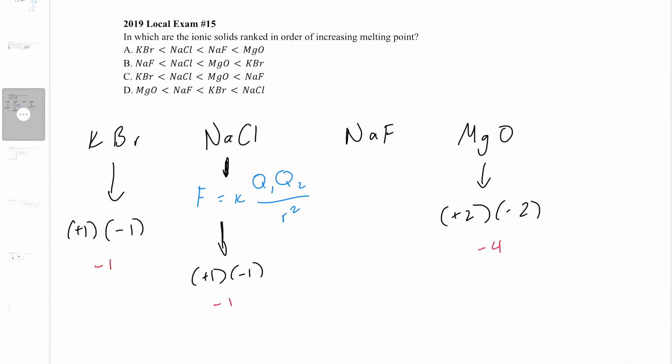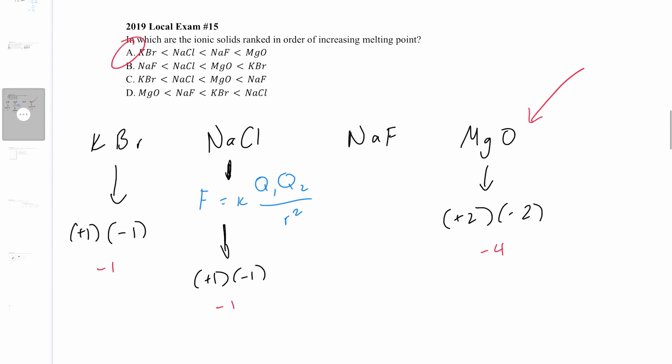MgO has a much greater force of attraction between its ions, meaning stronger intermolecular forces, so it has the highest melting point. The answer choice that puts MgO as having the greatest melting point is answer A. The answer for question 15 is A.